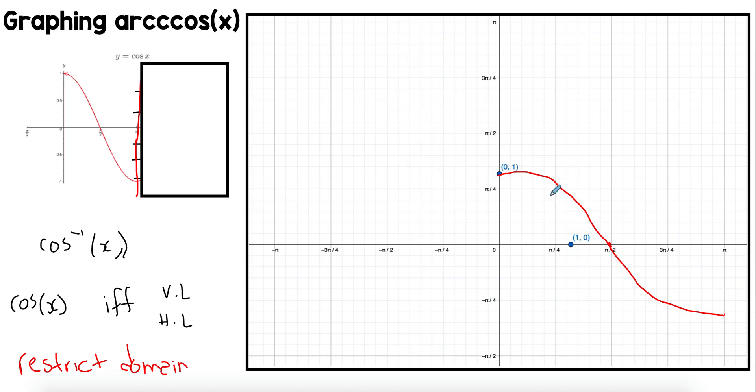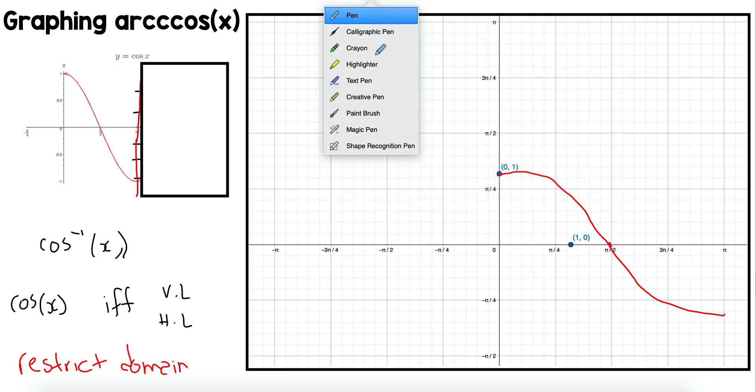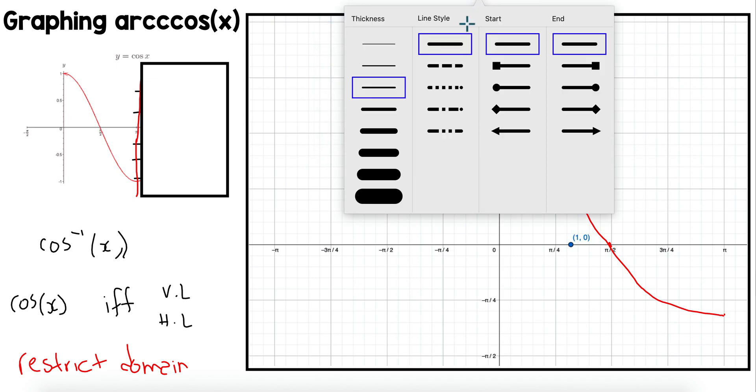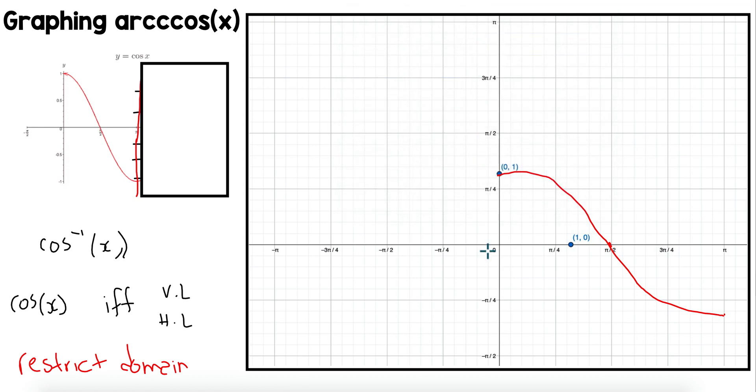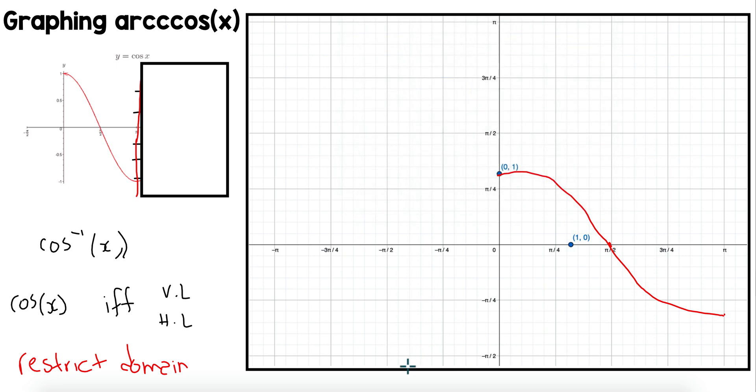What I want to do now, now that I've restricted my domain, is find the inverse of this. There's a quick way of finding the inverse and that's by reflecting your sketch on a y equals x line. If I draw y equals x, I'm just going to do a very thin line so it goes here.